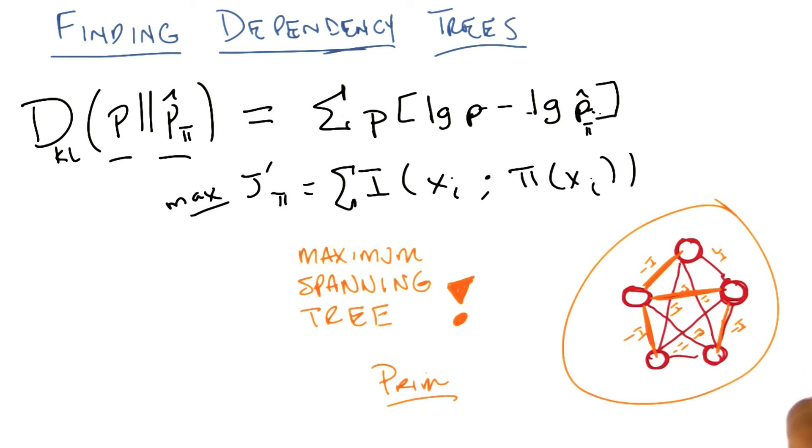Prim's algorithm runs in time quadratic, or polynomial anyway, in the number of edges. It's fairly efficient as things go. As we know, in theory, if it's polynomial, it might as well be free. So use Prim's algorithm, find the maximum spanning tree, and you're done.